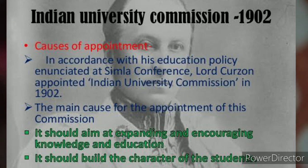The Indian Universities Commission was established to review the conditions of Indian universities for their improvement. Thomas Raleigh was the chairman of that commission. On 9th June, the report of the University Commission was submitted to Lord Curzon.